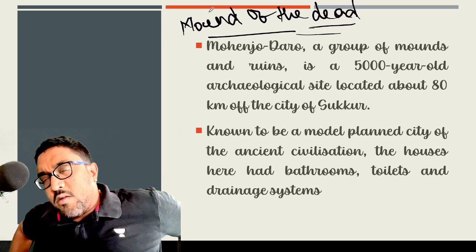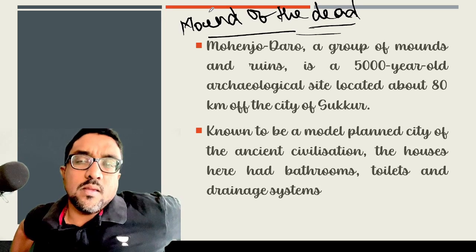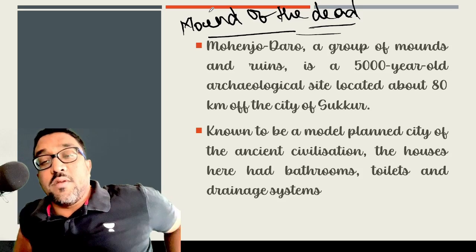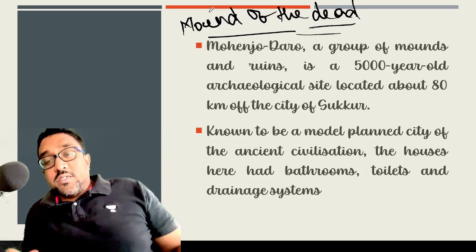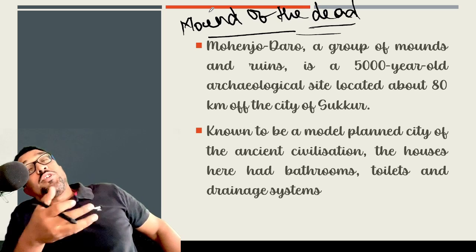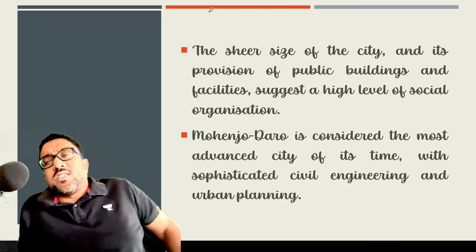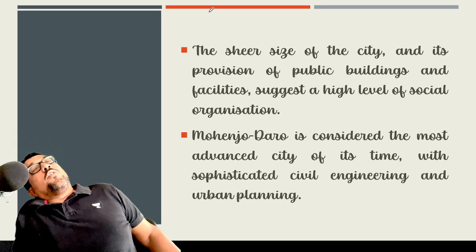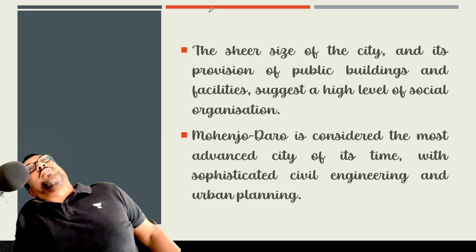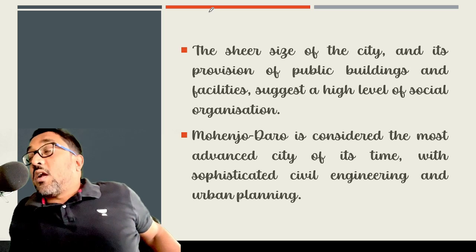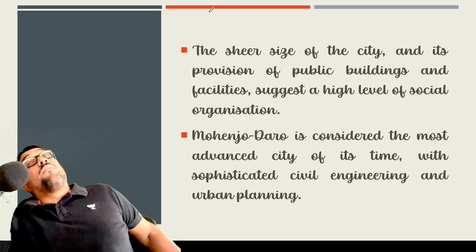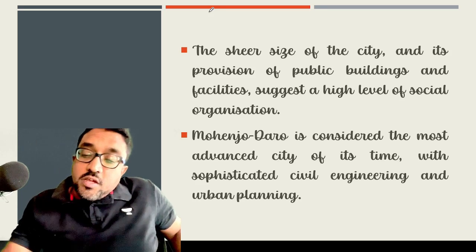Mohenjo-daro is an approximately 5,000-year-old archaeological site located about 80 kilometers from the city of Sukkur. It is known to be one of the first well-planned cities of ancient civilization. The houses had bathrooms connected to roads, grid planning, street lamps, and well-laid streets. The sheer size of the city, particularly for a period 5,000 years back in history, and its provision of public buildings and facilities, definitely suggests it was not just a city but a well-established civilization with a completely existing social organization. It is considered the most advanced city of the Indus Valley period, with sophisticated civil engineering and urban planning.